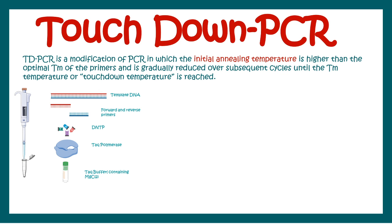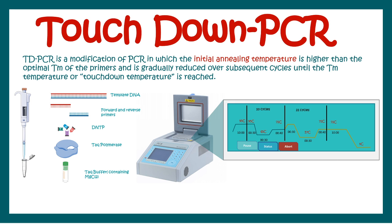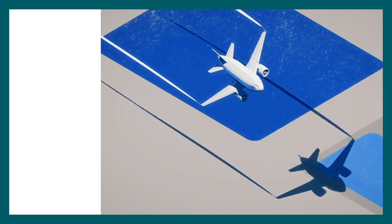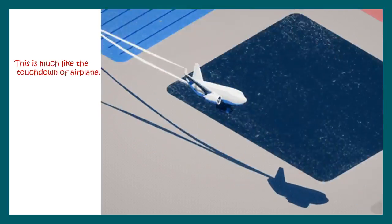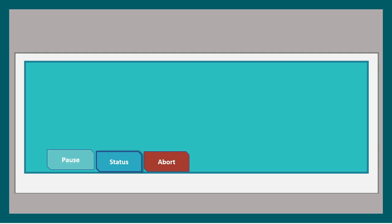In touchdown PCR, you utilize all the similar reagents that we use in a normal PCR reaction. The difference lies in the program. Touchdown PCR is comparable to the touchdown of an airplane — just as airplanes gradually decrease their altitude and then land on the runway, in touchdown PCR similar things happen.